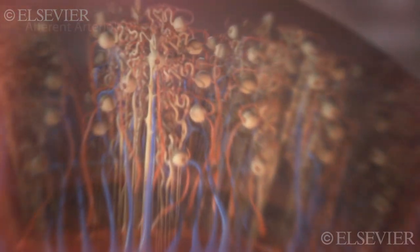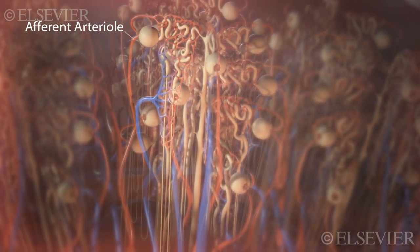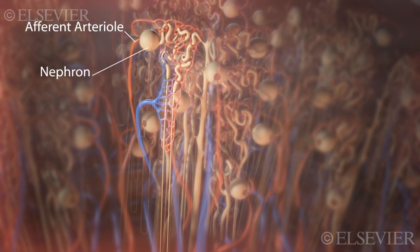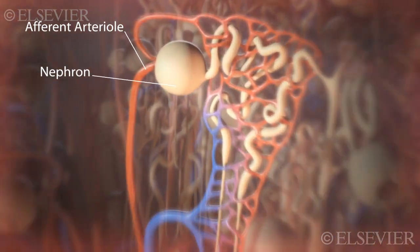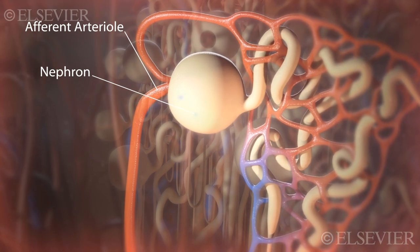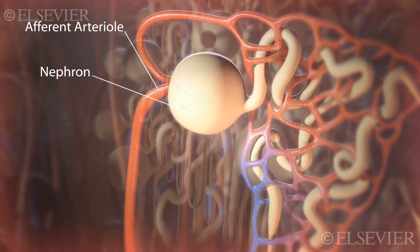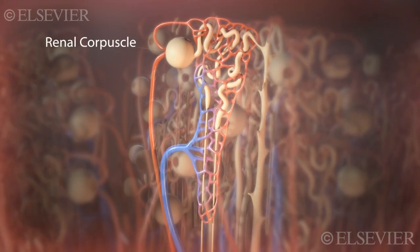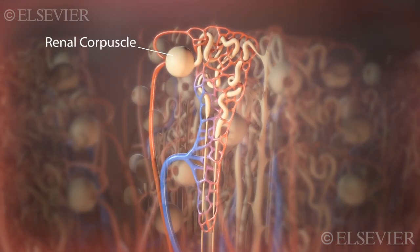The afferent arterioles carry blood directly into the nephrons, which are the functional units of the kidney. The nephron consists of two parts: the renal corpuscle and the renal tubule.